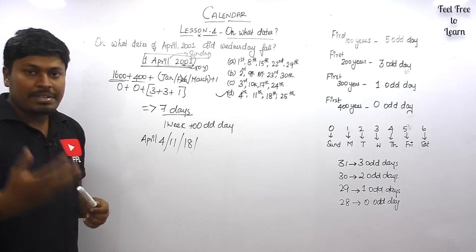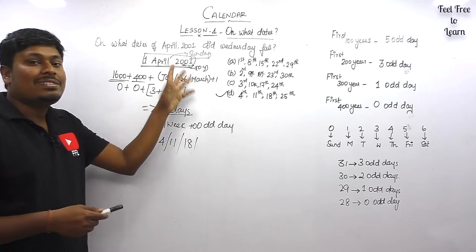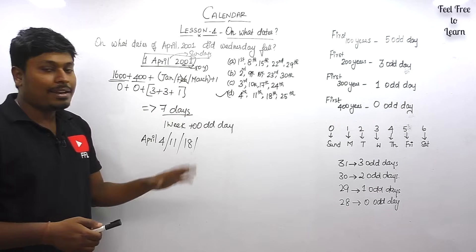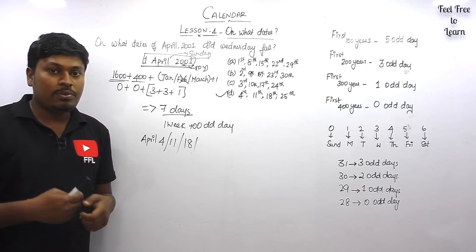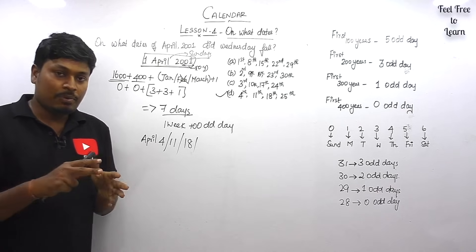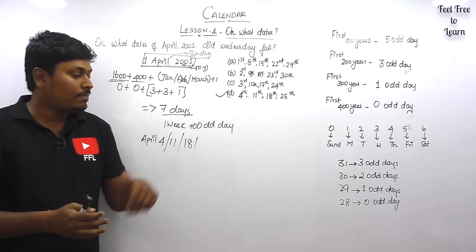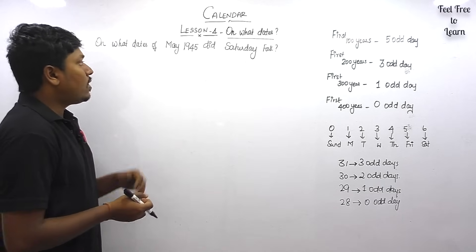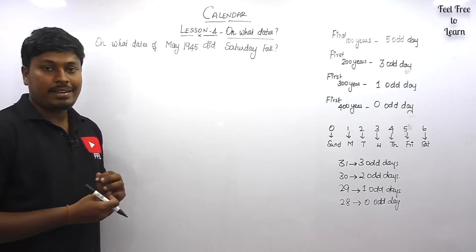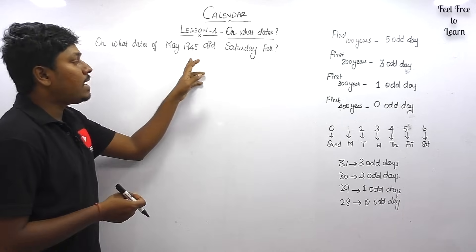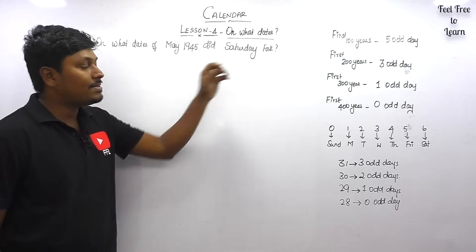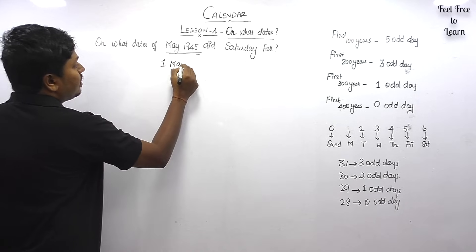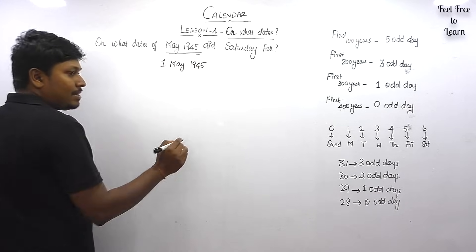Whatever the question, just find the first day of the month — whether it's 1st April, 1st December, or 1st March — and finding all remaining answers becomes easy. For this lesson four, you don't need to learn any new concept; the same concepts from lessons two and three apply. Question number two: on what dates of May 1945 did Saturday fall? Our target is to find all the days in May 1945 where Saturday falls.